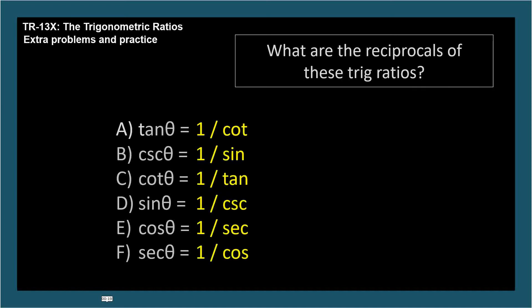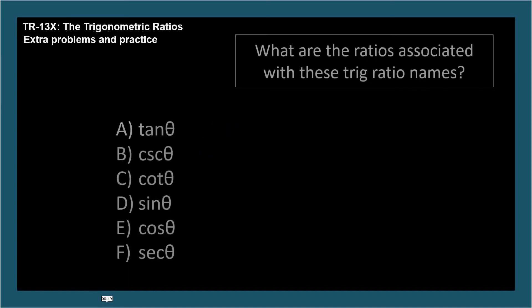What are the ratios associated with these trig ratio names? These are fractions using hypotenuse, opposite, and adjacent. Use SOH CAH TOA and the reciprocals. Pause and write down your answers.